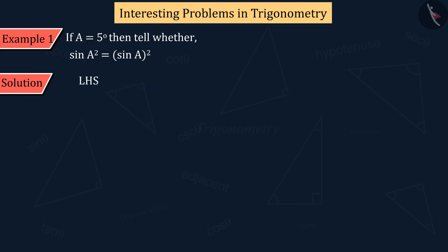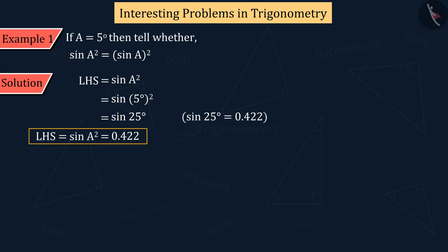If we talk about the left side, then here we have to calculate the value of sine of the square of angle A. Here A is equal to 5 degrees. So, the square of A will be equal to 25. So, the value of left side should be equal to the value of sine 25 degrees.